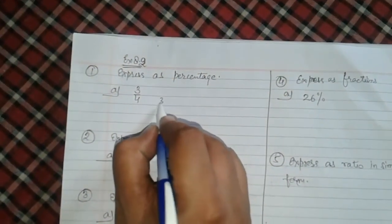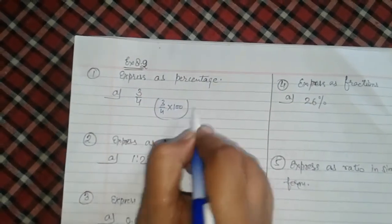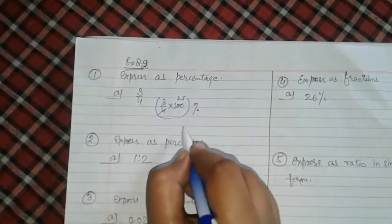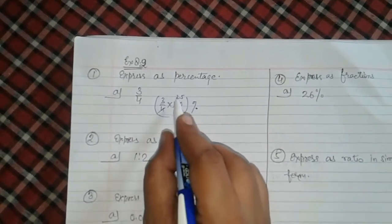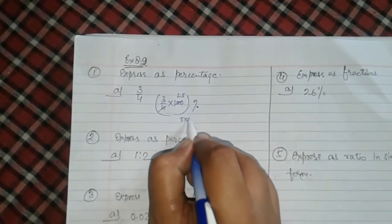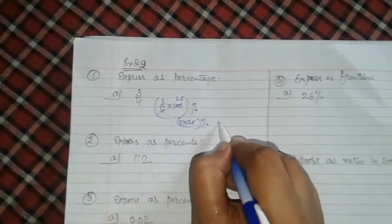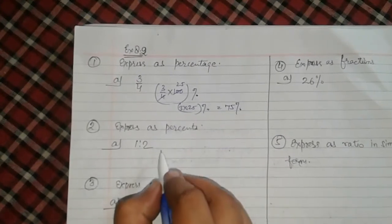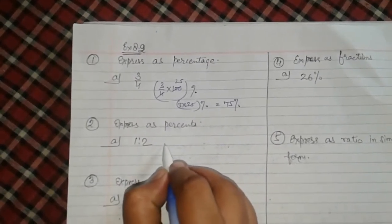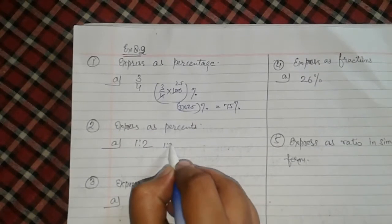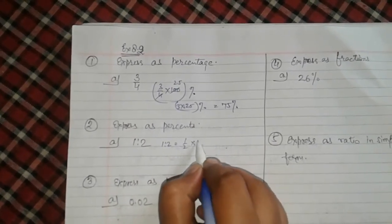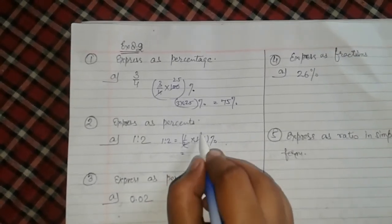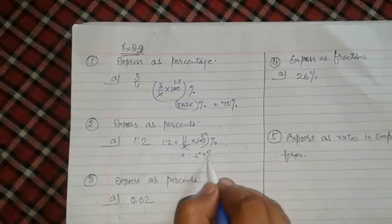Express as percentage 3 upon 4. 3 upon 4 multiplied by 100 percentage. When we divide 100 by 4, we get 25. 3 multiply 25 and it is 75%. Express as percentage 1 ratio 2. 1 ratio 2 is written as 1 upon 2. Same method applied. It is 50, so 50%.